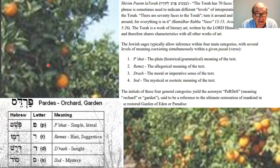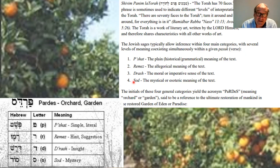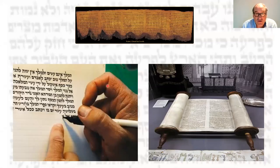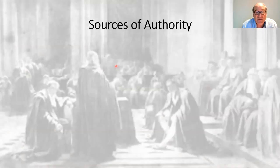So the four ways to read it: the simple plain, the allegorical, the interpretive, and Sod — the mystical side. Here once again we see what the Torah looks like, and we're going to deal with how that can be used as an interpreter. In reality, we're told that any interpretation given by a scholarly person is as if it was given to Moses at Sinai.